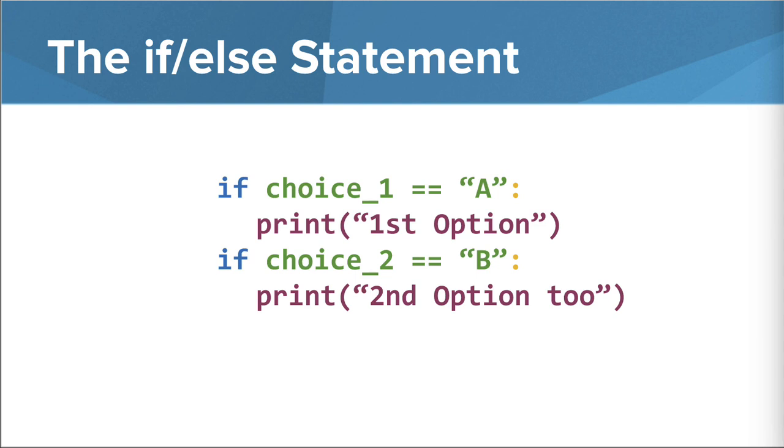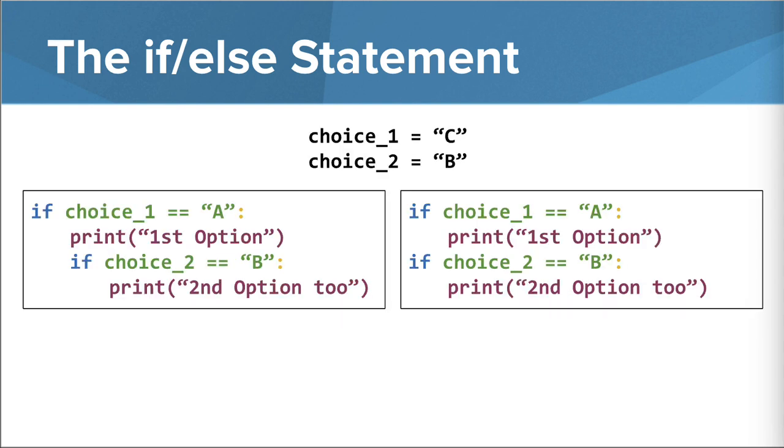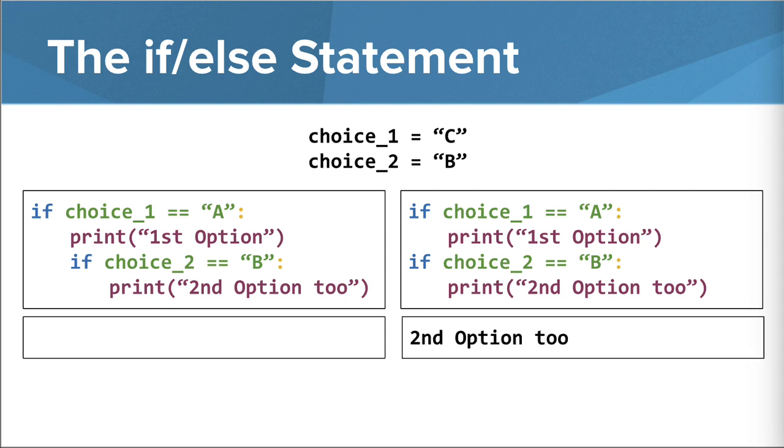Let's look at an example. Here, we set the value of choice1 to equal C, and choice2 to equal B. Can you guess what snippet of the code will be printed? On the left, since choice1 is not equal to A, nothing inside the statement gets executed, and nothing is printed. On the right, choice1 is still not equal to A, so it doesn't print first option. But then, the program moves to the second if statement, and since choice2 is equal to B, second option too is printed.